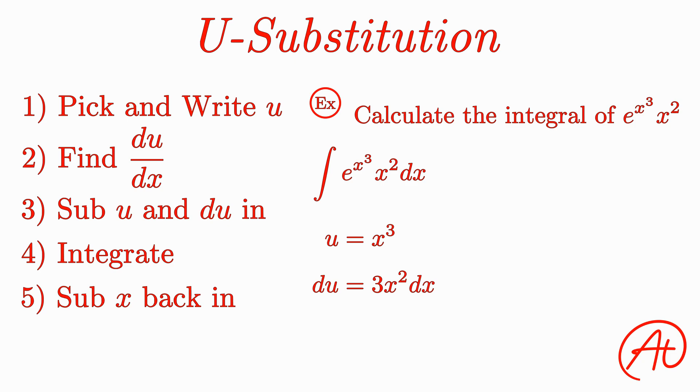Now this example is slightly different than the last one, because after that step, we still can't plug this directly into our integral. This is because we have 3x squared dx, but we only have x squared dx in our integral. Fortunately, if we divide both sides by 3, we get our desired result.